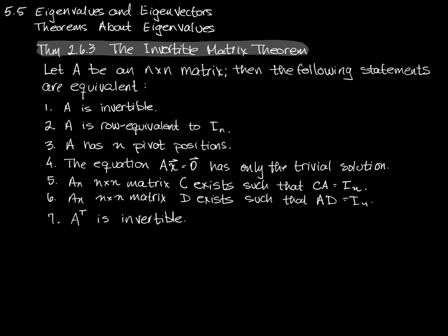Then in Section 3.4, we added a number eight to this list: the determinant of A is non-zero. So if you know A has n pivot positions, then you also know its determinant is non-zero. If you know A is invertible, then you can say its determinant is going to be non-zero. If you take the determinant of a square matrix and it's not zero, then you know all of these other things. So this is a pretty powerful addition.